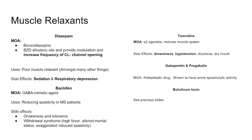Baclofen is another muscle relaxant — it's a GABA mimic that acts like the neurotransmitter GABA and through this effect produces some muscle relaxant activity. What I would know is: baclofen = MS spasticity. That's the patient population you'll see it used in. It can cause drowsiness, and there's a withdrawal syndrome if the drug is removed too quickly without titrating — this can lead to fever, altered mental status, and rebound spasticity.